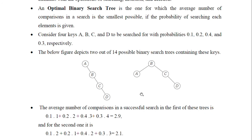For the second tree, for A there are two comparisons needed — probability of occurrence into 2. For B, only one comparison is needed — 0.2 into 1. After calculating all nodes likewise, the average number of comparisons is 2.1 here. However, comparing these two, you cannot say this is the optimal binary search tree without comparing all 14 possible trees that can be made with these four keys.